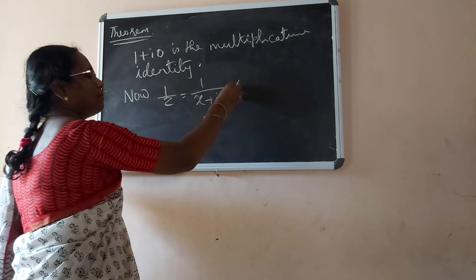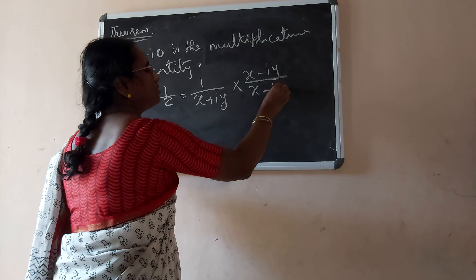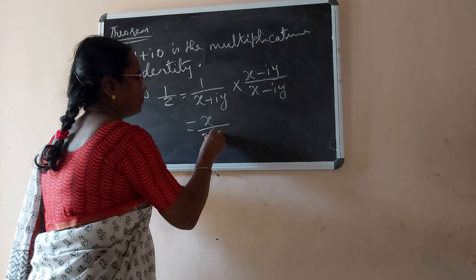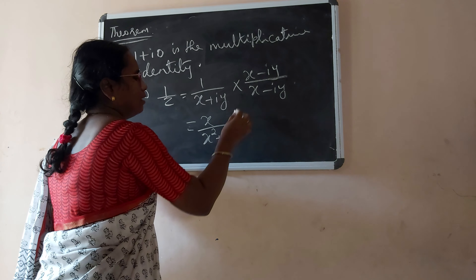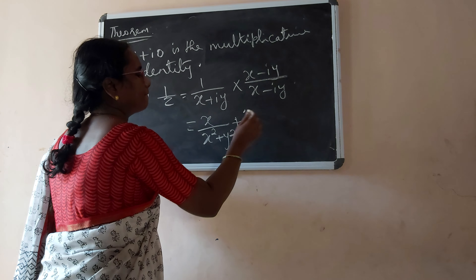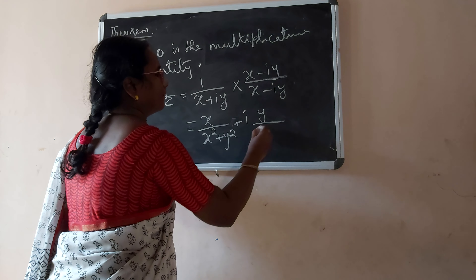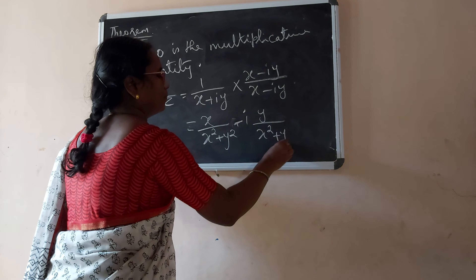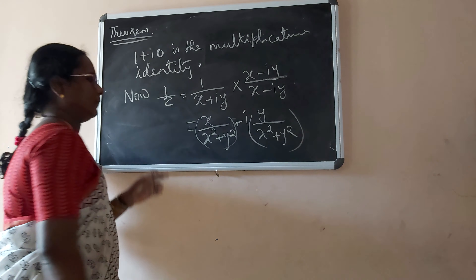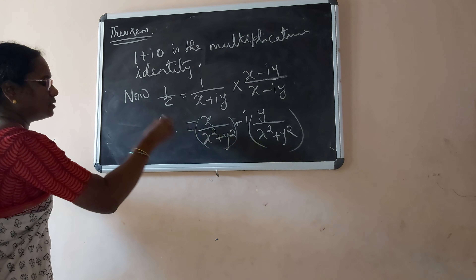It can be easily verified that multiplication is associative and commutative. Then 1 plus i·0 is the multiplicative identity. Just as 1 is the multiplicative identity in the real number system, in complex numbers 1 plus i·0 is the multiplicative identity.